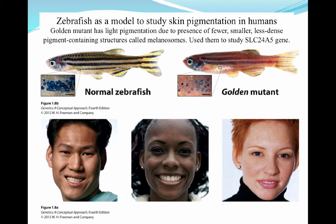Genetic models are going to be animals or plants used to study genomic trends, conditions, and phenotypes. One example is the zebrafish, a very small fish created to study how pigmentation in humans actually occurs. The zebrafish were developed by the University of Pennsylvania, where researchers created a genetic mutant that has light pigmentation due to fewer and smaller pigment-containing structures called melanosomes. They use this model of normal zebrafish versus the golden mutant zebrafish to study a specific gene — the SLC24A5 gene.